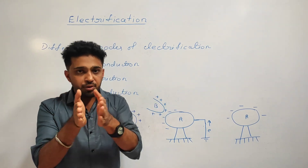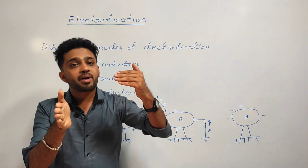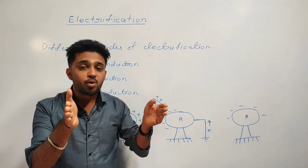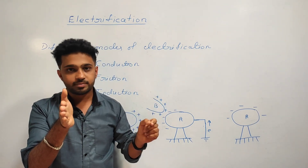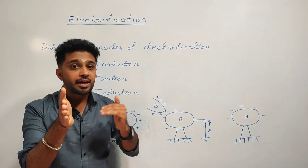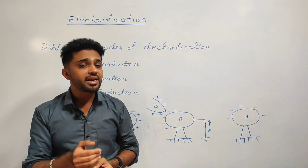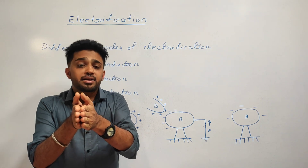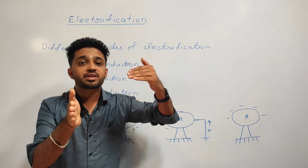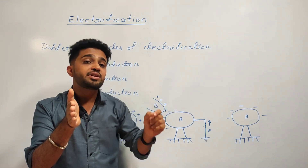If we add electrons to a neutral conductor, the number of electrons becomes more than the number of protons. That means the body carries negatively charged particles — electrons outnumber protons — and that neutral body becomes negatively charged.